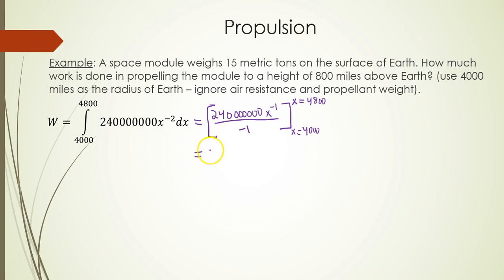Then, you can work with this a little more, clean it up a little bit. You get negative 240,000,000 over x. And you're evaluating lower bound x equals 4,000 all the way up to x equals 4,800.